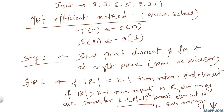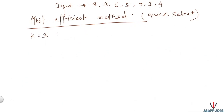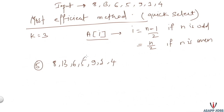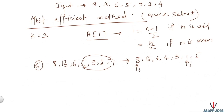Let's understand the steps with an example. Suppose we are looking for the third largest value. Our pivot selection: i is (n minus 1) divided by 2 if n is odd, or n divided by 2 if n is even. In the first pass, our pivot element is 5 and our input sequence is given. We swap the pivot element with the last element, so 5 comes to the end and 4 moves. The sequence becomes 8, 13, 6, 4, 9, 1, 5, and we place pointer i at the start and j beside the pivot.